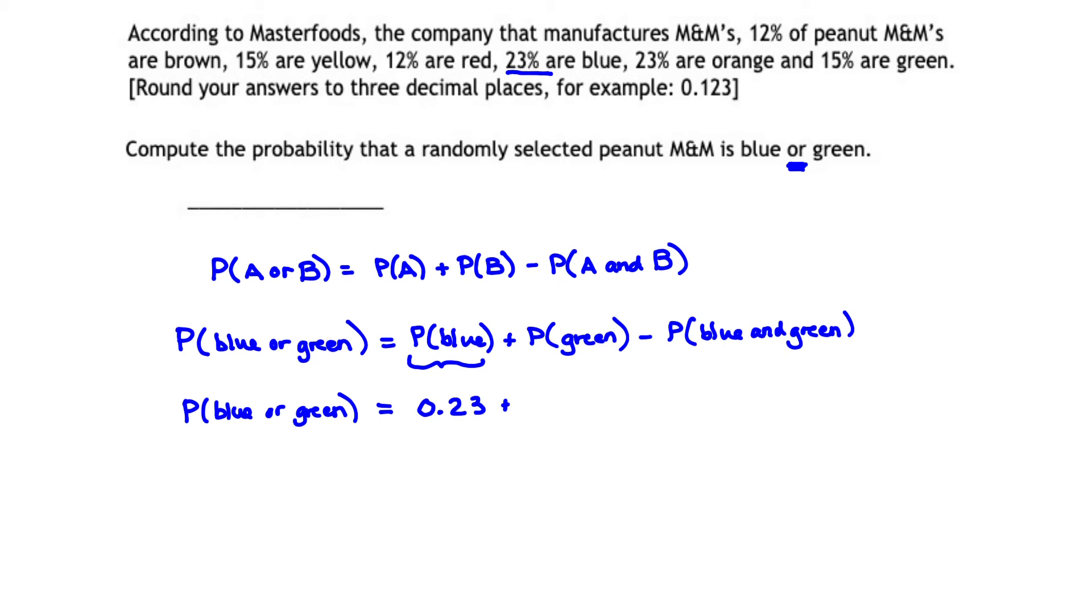Now, we also want to consider the probability that the M&M is green. Notice 15% of the M&Ms are green, so the probability of selecting a green M&M is 0.15.